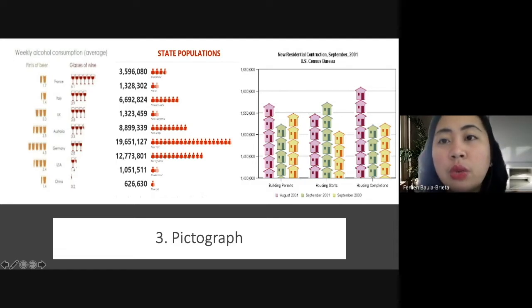Another one is with the residential construction. So we have here building permits, housing starts, and housing completion. So you can see the purple here is in August, September, and we have after a year. So you can see there is increased building permits in August compared to the housing. If you can see there are many houses here compared to the other ones.